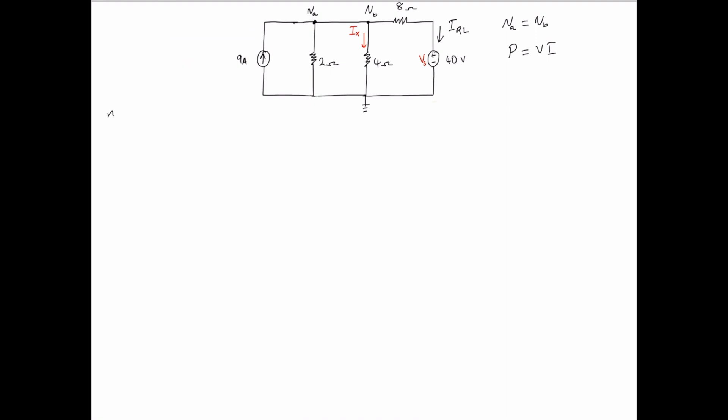Now, let's identify that we're using nodal analysis. So, node VA applying KCL. We see that a 9A current is entering the terminal.